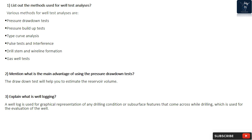Question 1: List out the methods used for well test analyses. Various methods for well test analyses are: Pressure Drawdown Tests, Pressure Build-Up Tests, Type Curve Analysis, Pulse Tests and Interference, Drill Stem and Wire Line Formation, and Gas Well Tests.